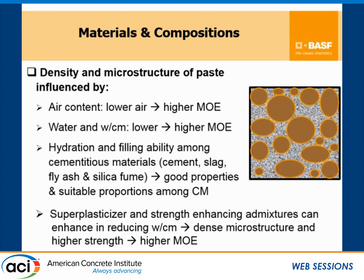Regarding material and composition, the density and microstructure of the paste are influenced by air content — lower air gives higher MOE. Lower water and lower water-to-cementitious materials ratio also give higher MOE. Hydration and filling ability among cementitious materials like cement, slag, fly ash, and silica fume contribute positively. Admixtures such as superplasticizers or strength-enhancing admixtures can enhance reduction of water-to-cementitious materials ratio, thereby promoting dense microstructure, higher strength, and therefore higher MOE.